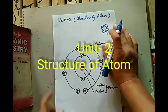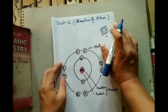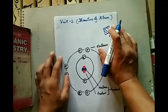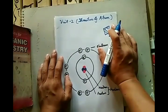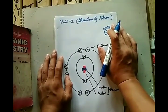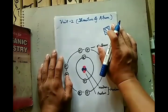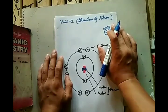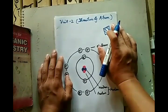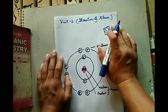Hello everyone. Today our discussion will be on Unit 2: Structure of Atom. You all know what an atom is. Atom is the smallest unit in which matter can be divided without the release of electrically charged particles. We can say it is the smallest unit of matter that has the characteristic properties of a chemical element.